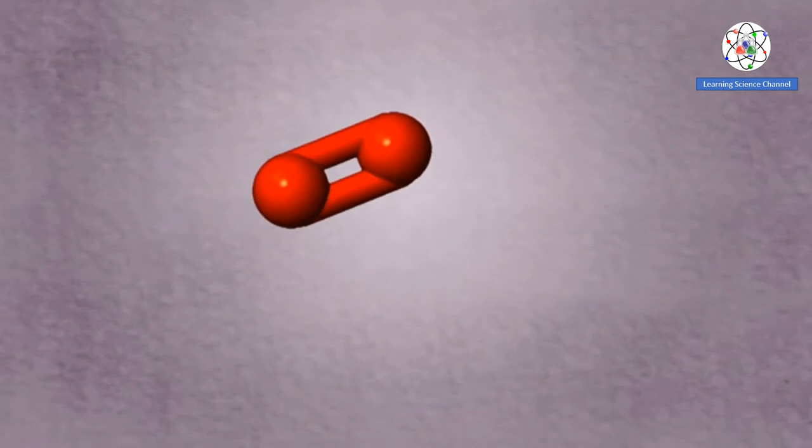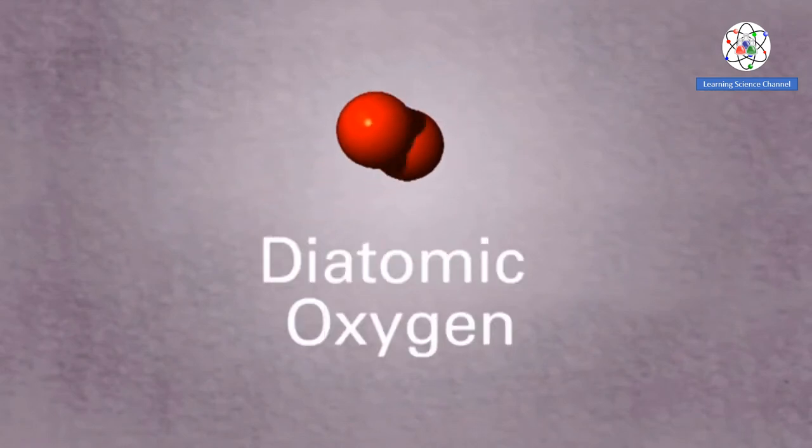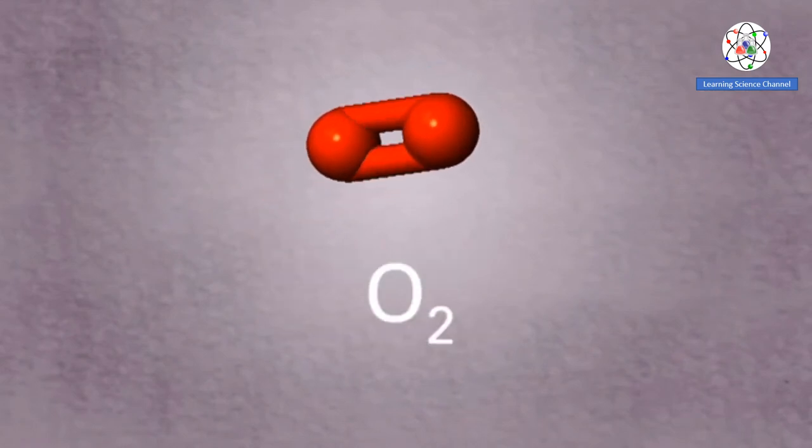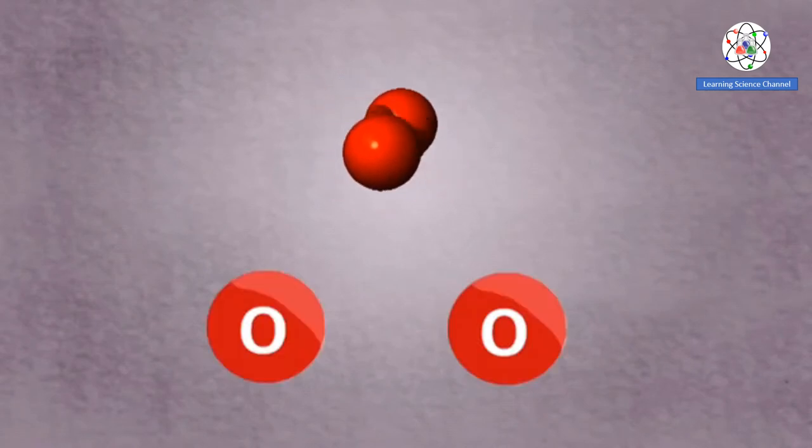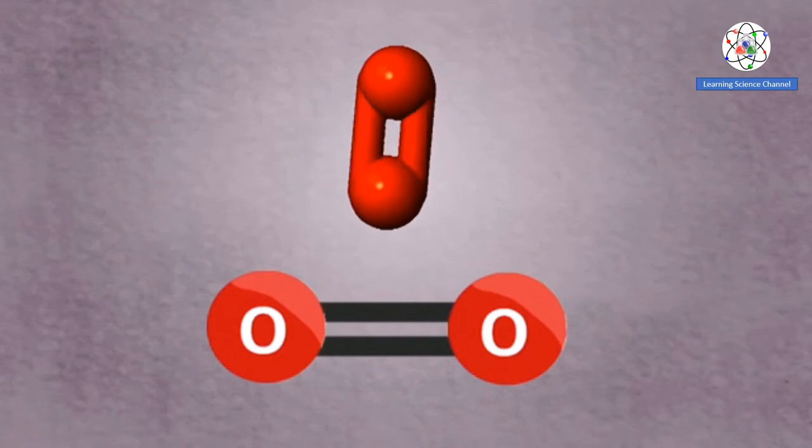Oxygen can exist as diatomic oxygen, which is the form that we breathe in and is vital for survival. In this allotrope, two oxygen atoms are held together by a double covalent bond.